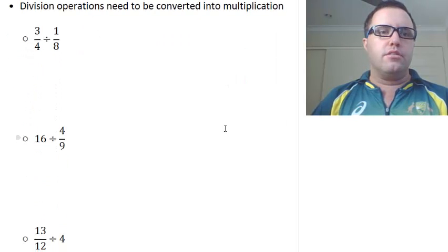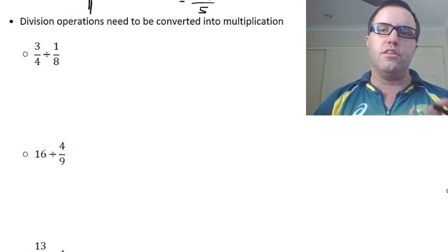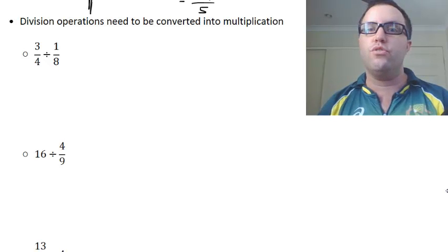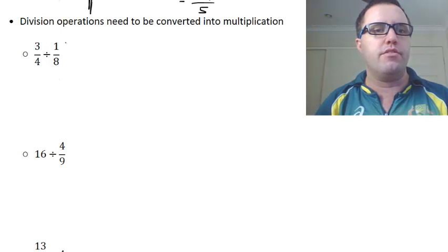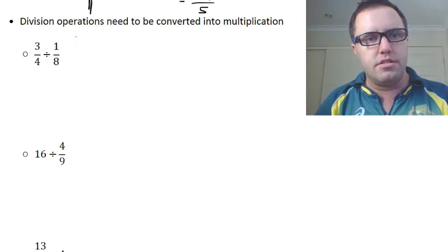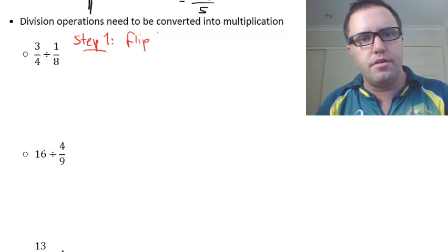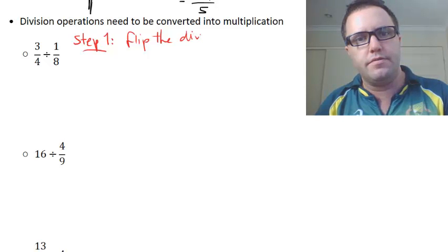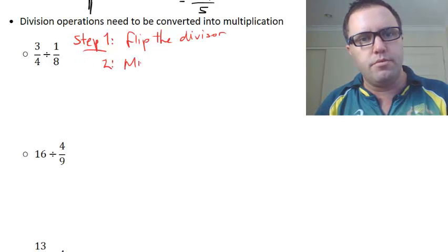All right, let's quickly spend a bit of time talking about division. Like multiplication, it is also very easy to calculate. So there's a little bit of a process, though, first. Step one is that we flip the divisor, and then secondly, we multiply instead.